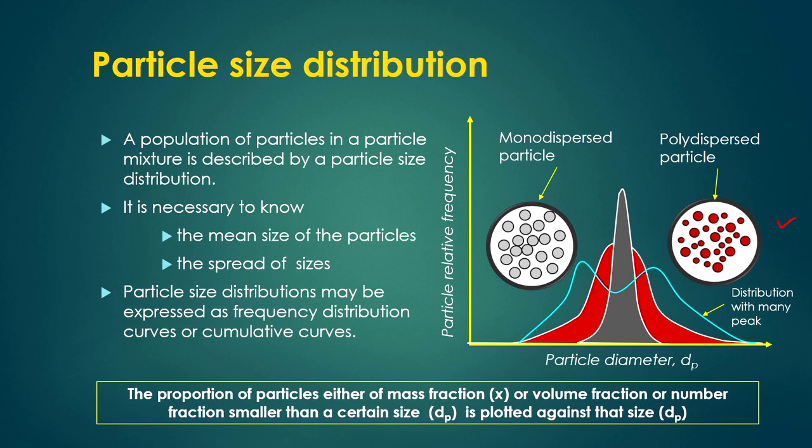The particle number can be represented as particle frequency — how many numbers in a particular class, in a particular range of particle size. It can also be represented by relative frequency, that means in a particular class, how many numbers out of the total numbers — that fraction is called relative frequency. So you can represent that distribution as relative frequency with respect to particle diameter.